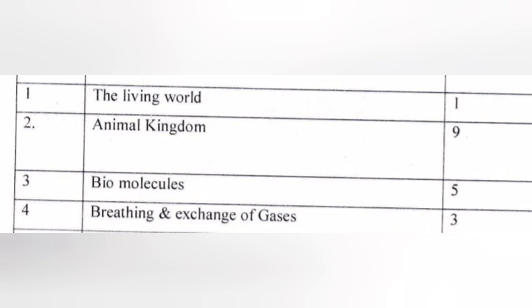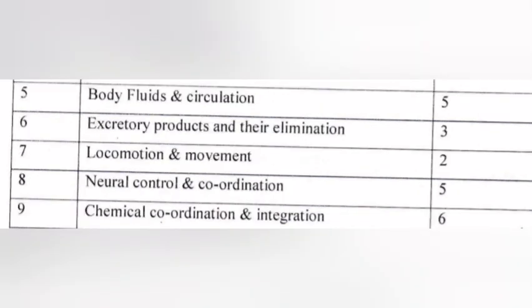Score 3. Chapter 5 Body Fluids and Circulation Score 5. Chapter 6 Excretory Products and Their Elimination.